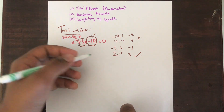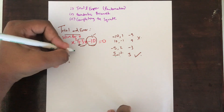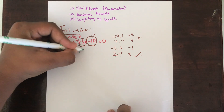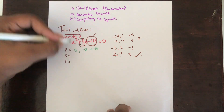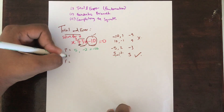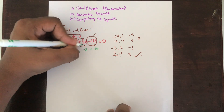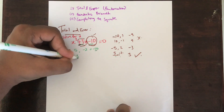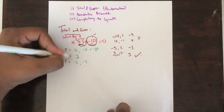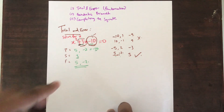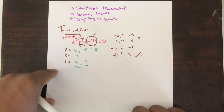We have seen that 5 and minus 2 work best. So for the product you have 5 and minus 2, which equals minus 10. The sum is plus 3, and the factors are 5 and minus 2. So 5 and minus 2 are our answers.